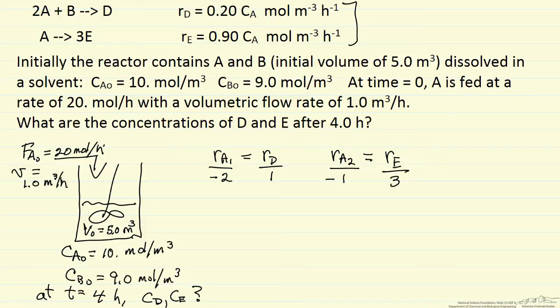to write down the mass balance for A. For a semi-batch reactor, the change in the total number of moles, N_A, with respect to time is due to A flowing into the reactor. This is the molar flow rate, 20 moles per hour of A coming in. There's no A leaving, so that term is zero. Then we have the rate of reaction of A by the first reaction times the volume, plus the rate of reaction of A by the second reaction times the volume.